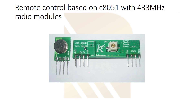This is a remote control based on the C8051 with a 433 MHz radio module — that is the carrier frequency. As you can see, this is a receiver and this is a transmitter — two separate components.